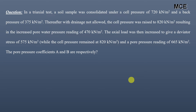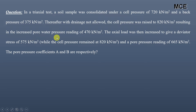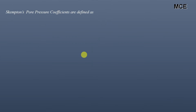I have been given a question which states that in a triaxial test, a soil sample was consolidated under a cell pressure of 720 kPa and a back pressure of 375 kPa. Thereafter, with drainage not allowed, the cell pressure was raised to 820 kPa, resulting in an increased pore water pressure reading of 470 kPa. The axial load was then increased to give a deviator stress of 575 kPa, while the cell pressure remained at 820 kPa and a pore pressure reading of 665 kPa. We have to find the pore pressure coefficients A and B.